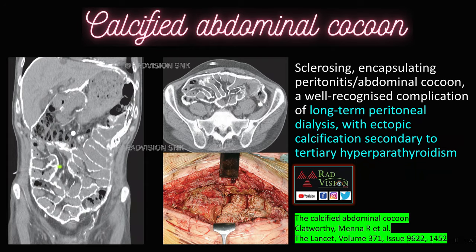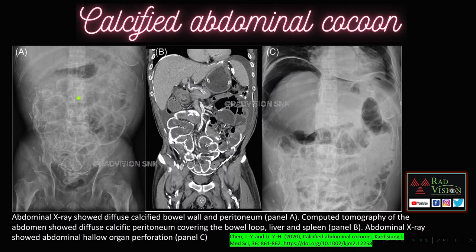In calcified abdominal cocoon, the bowel wall is calcified and the entire visceral peritoneum is also calcified over the liver and spleen. This is seen in long-term peritoneal dialysis, with ectopic calcification secondary to tertiary hyperparathyroidism. On plain radiograph, multiple clustered bowel loops show bowel wall calcification and visceral peritoneum calcification. Free air under both domes of the diaphragm indicates pneumoperitoneum, likely due to hollow viscus perforation.